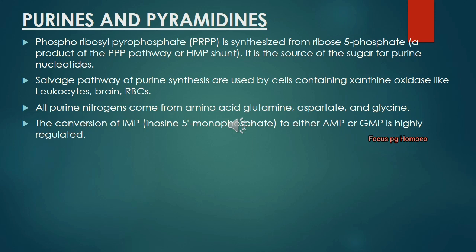Purines and Pyrimidines are commonly asked questions in biochemistry. Purines and Pyrimidines basically belong to the category of acidic amino acids. They are derived from glutamine, aspartate and glycine.